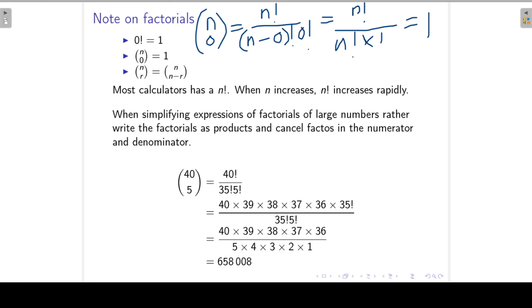Most calculators have a function for n factorial. However, when this n increases, n factorial increases rapidly. So then it's best to simplify expressions of factorials for large numbers. For example, if we have 40 combination 5, we write it by definition as 40 factorial over 35 factorial times 5 factorial. Now 40 factorial can be written as 40 times 39 times 38, 37, 36 times 35 factorial, divided by 5 factorial. And then below the line 35 factorial times 5 factorial, and then these two 35 factorials cancel out. So we have 40 times 39 up until 36, divided by 5 factorial, and that will give us our answer of 658,008.